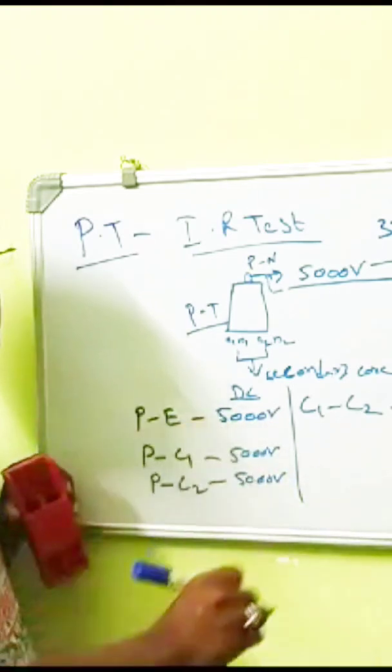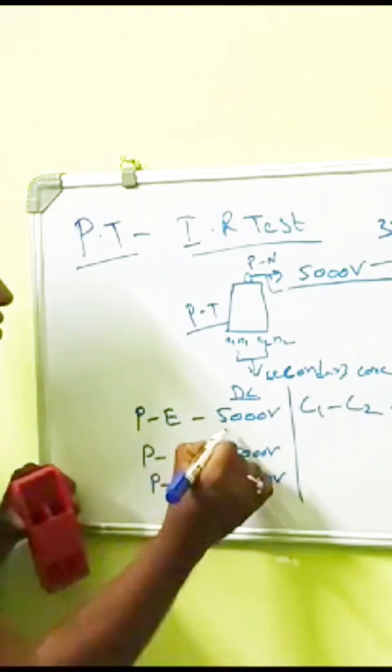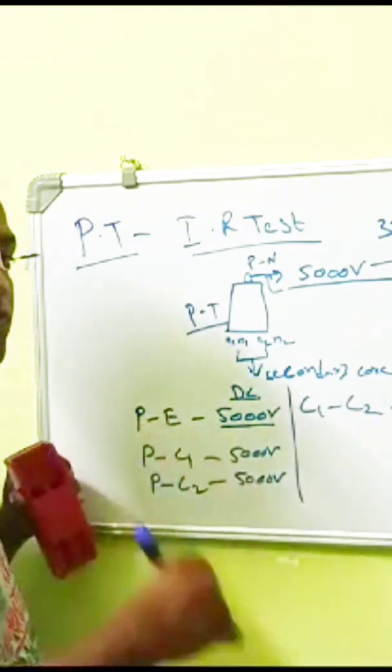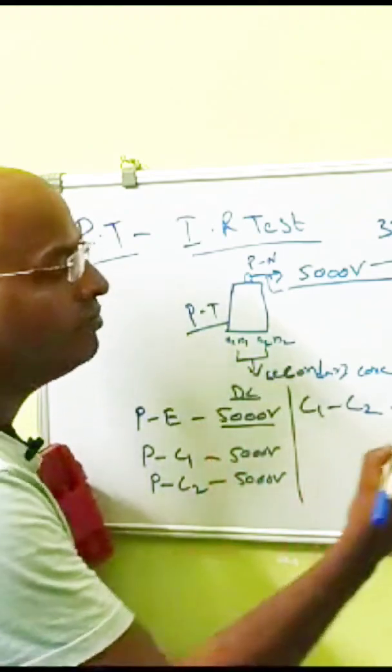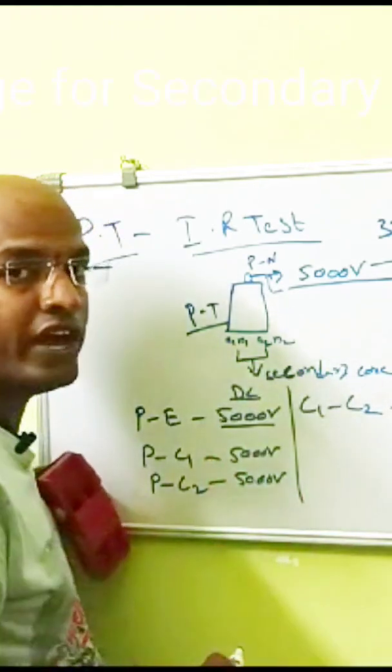Whenever it comes to reference as a primary, we need to apply the 5,000 volt. When it comes to secondary, it is the reference of secondary. Means we need to apply the 5,000 volt.